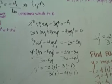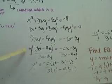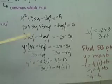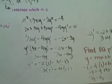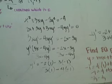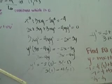And then you would have to isolate the y prime, and you would get y prime times 3x minus 4y equals negative 2x minus 3y. And then you divide it, so you would get just the y prime.